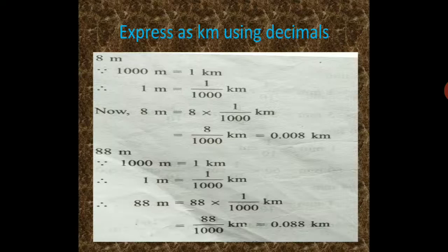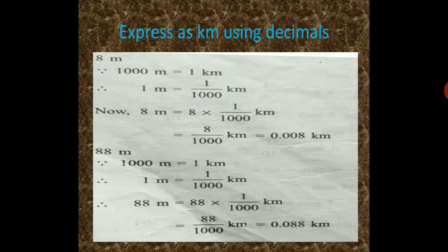Next, how to express as kilometer using decimals? Here, 8 meter is given. As we know that 1 kilometer is equal to 1000 meter. Therefore, 1 meter is equal to 1 by 1000 kilometer. Now, 8 meter is equal to 8 into 1 by 1000 kilometer, equal to 8 by 1000 kilometer. In decimal form, it is 0.008 kilometer.